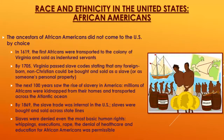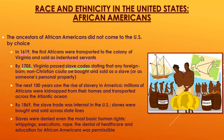African Americans' ancestors did not come to the U.S. by choice. In 1619, the first Africans were transported to Virginia — still a colony — and sold as indentured servants. By 1705, Virginia passed the slave codes stating that any foreign-born non-Christian could be bought and sold as a slave. Over the next hundred years, slavery rapidly expanded, particularly in the South, as millions of Africans were kidnapped from their homes and transported across the Atlantic Ocean, many dying during that journey.